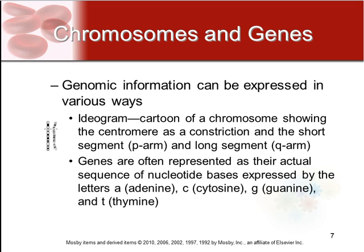Genomic information can be expressed in various ways. There can be an ideogram, which is a cartoon of a chromosome showing the center of the centromere as a constriction. There is a short segment called the P-arm and a long segment called the Q-arm.